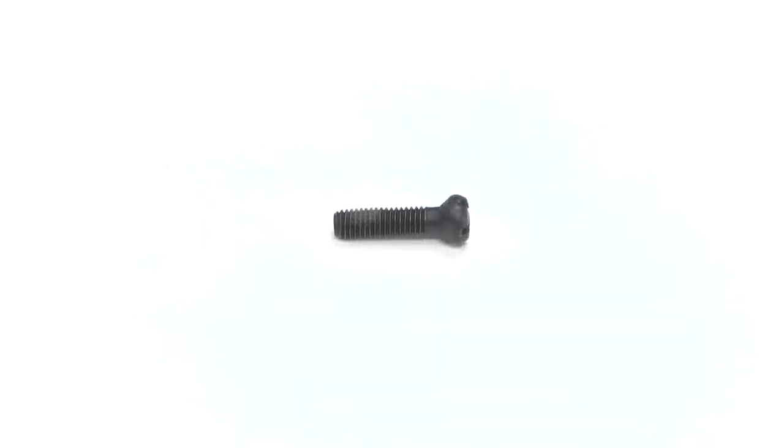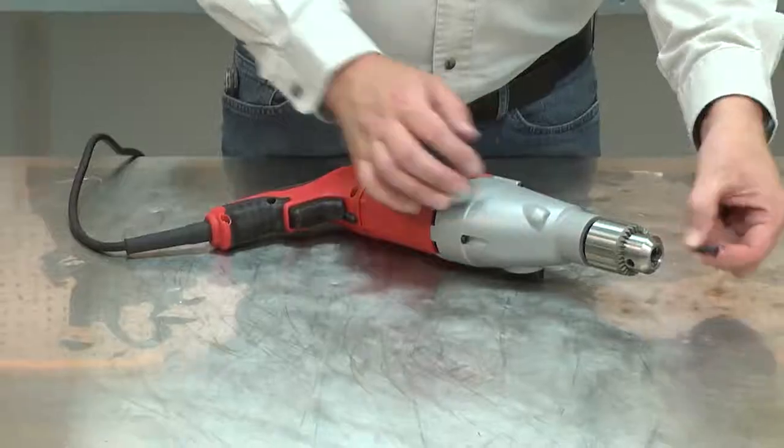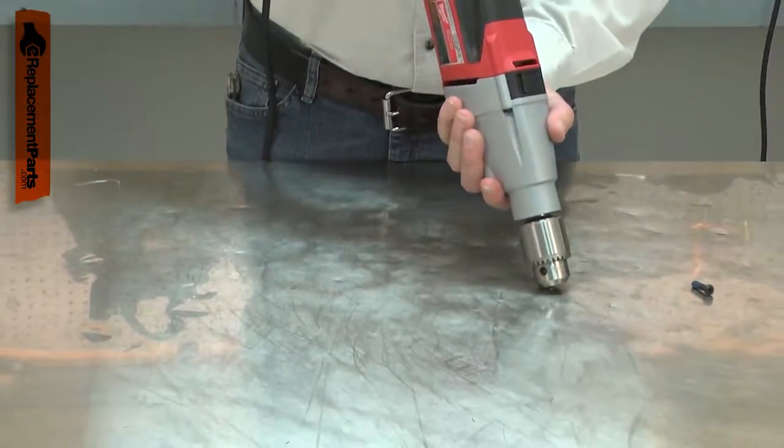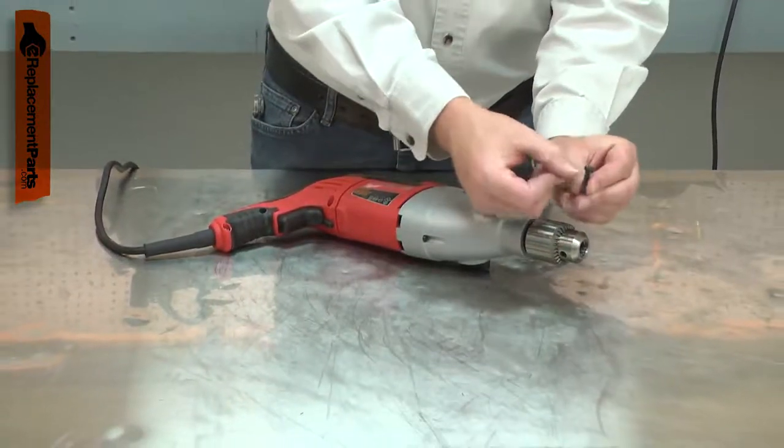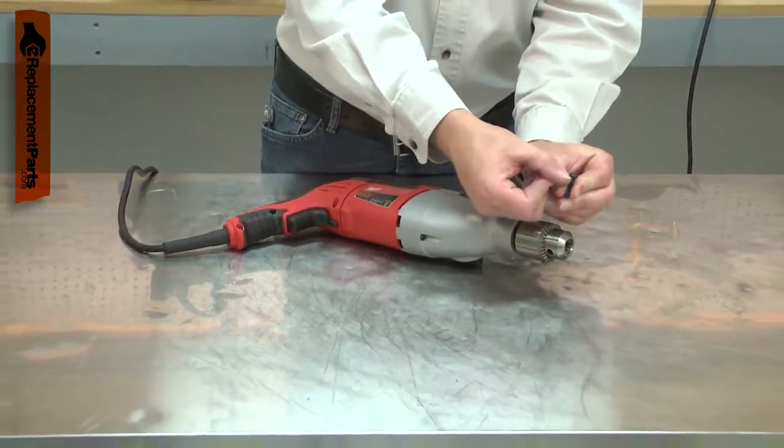The chuck retaining screw is used to secure the chuck to your drill. It has reverse threads so it won't unthread while you're drilling. The screw can eventually vibrate out. The head can break off or the head can be stripped out while removing the screw.